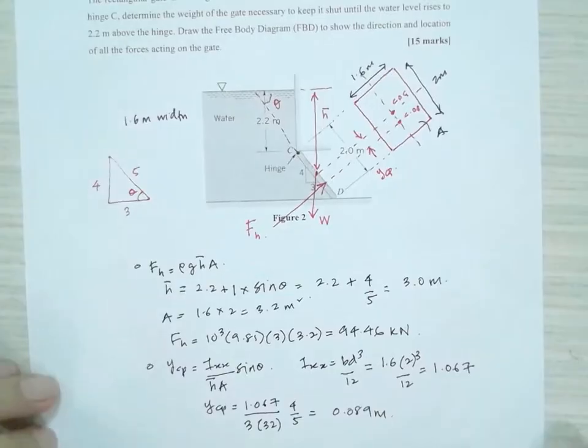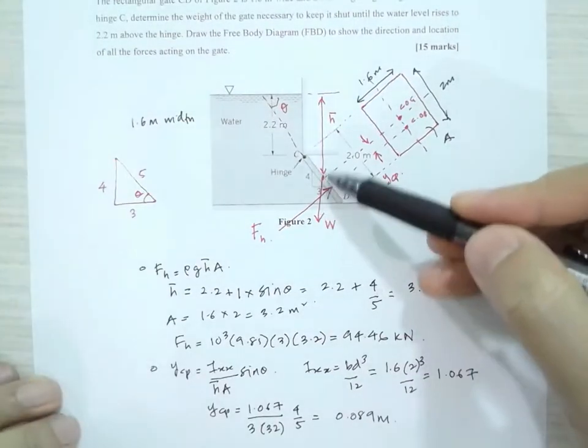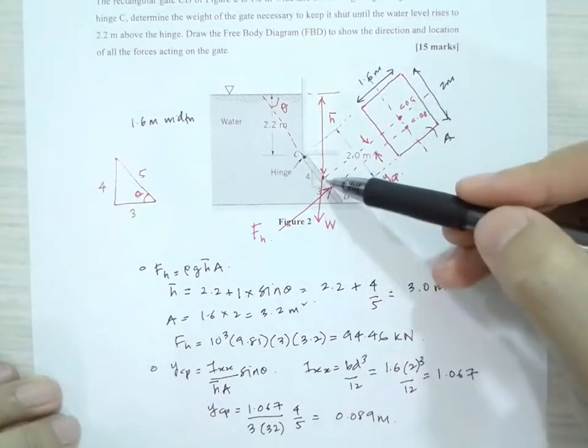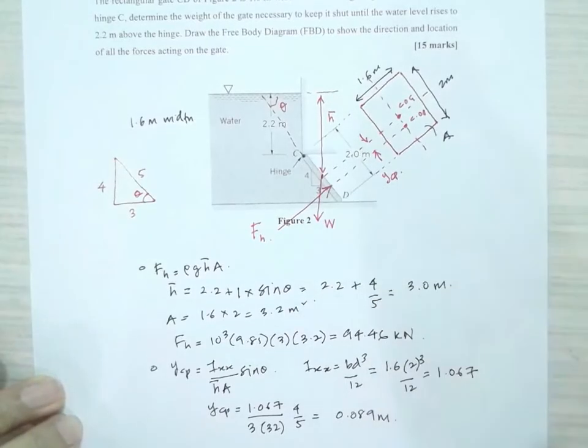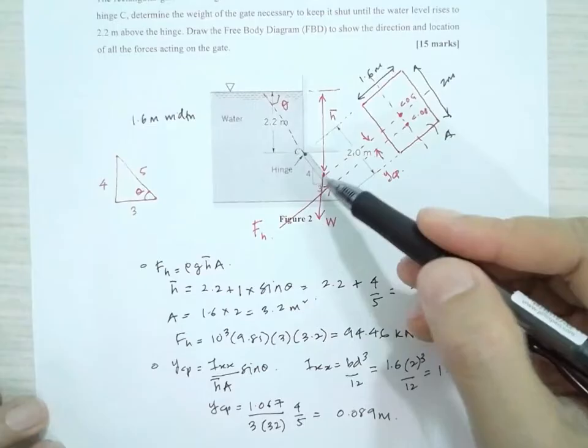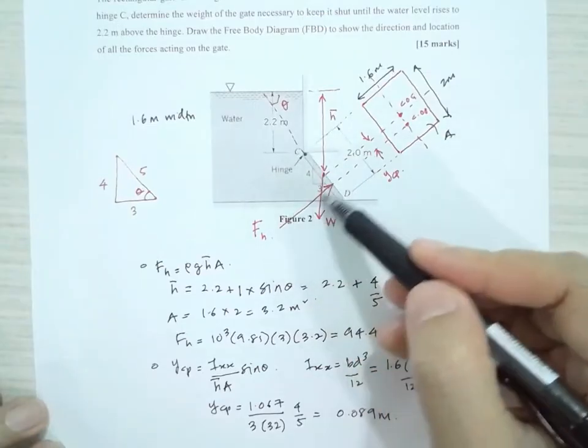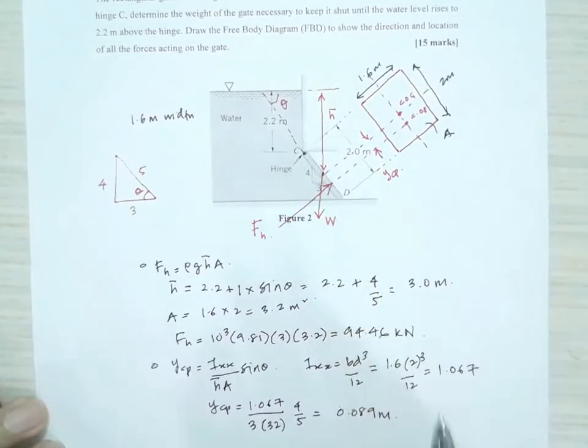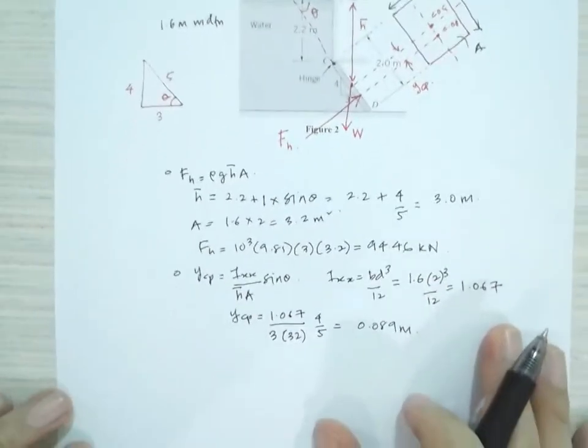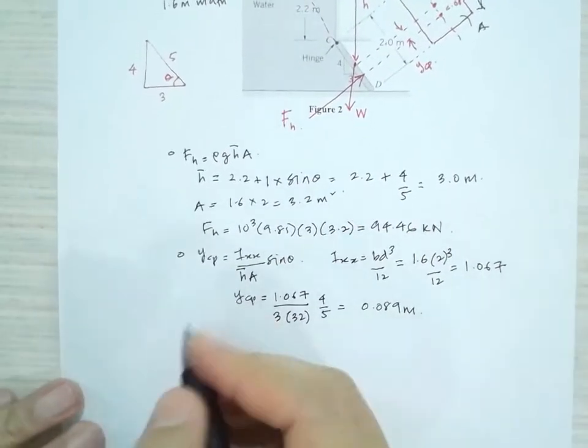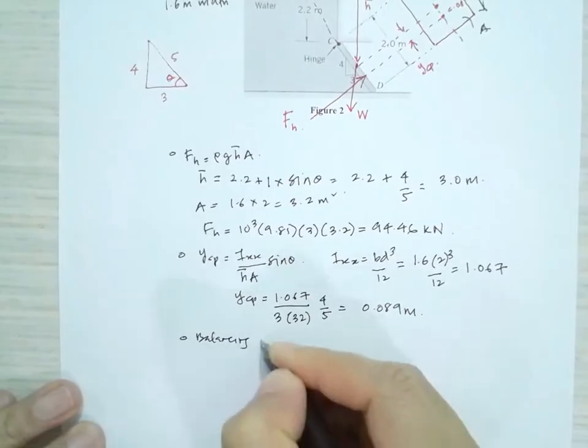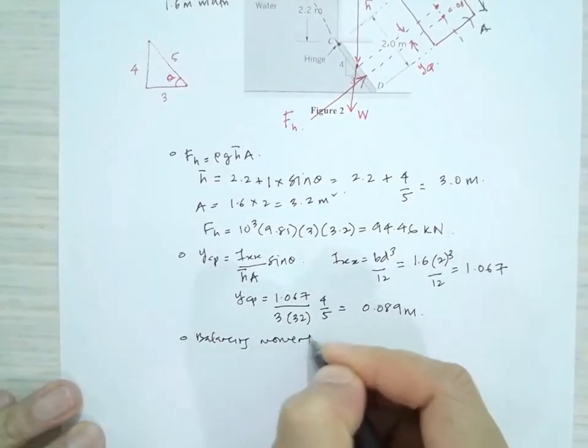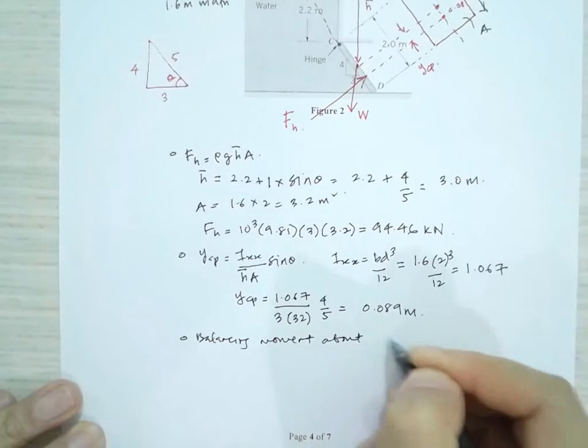In the last part, we're asked to find the weight which will just keep the gate shut. That means the moment has to be balanced. The clockwise moment due to the weight and the anticlockwise moment due to hydrostatic force must be exactly balanced. So we're balancing the moment about C.